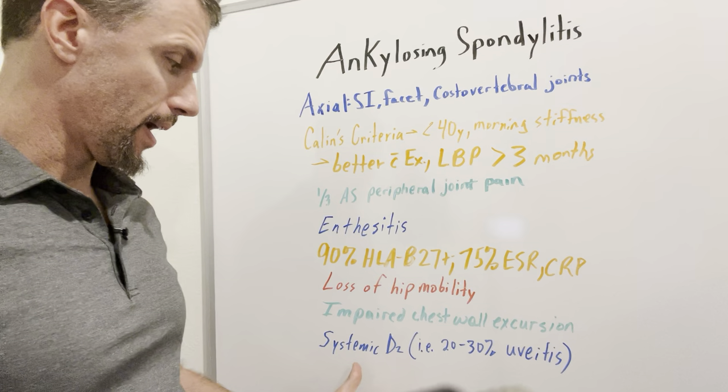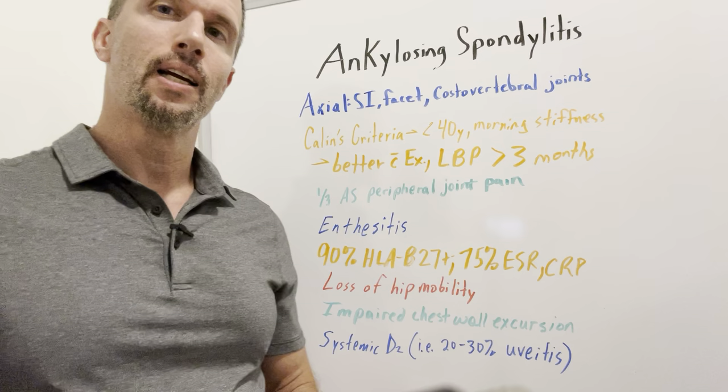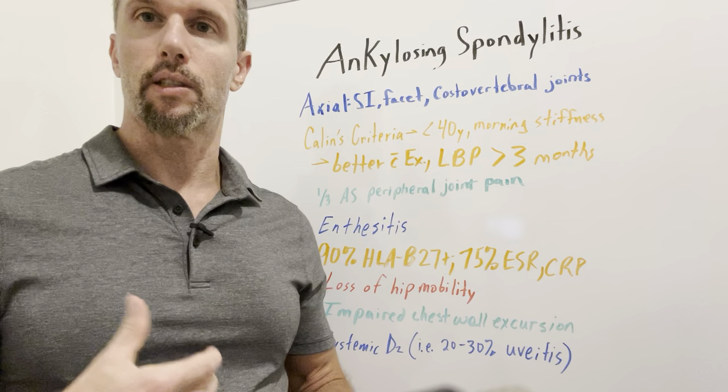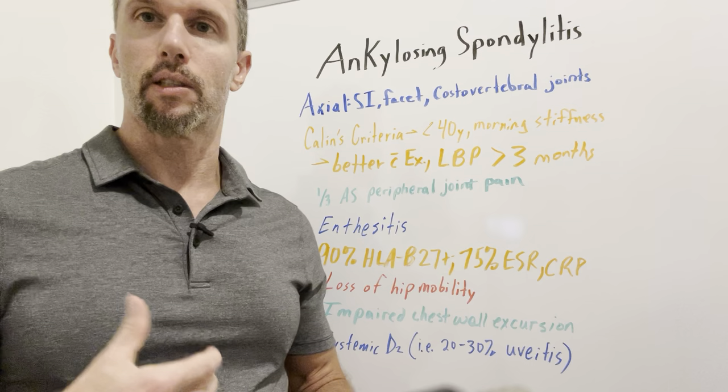A lot of times patients will have systemic disease as well. About a quarter of patients with ankylosing spondylitis have inflammation of their iris called uveitis, where it gets red, hurts, causes blurred vision, and visual disturbances.